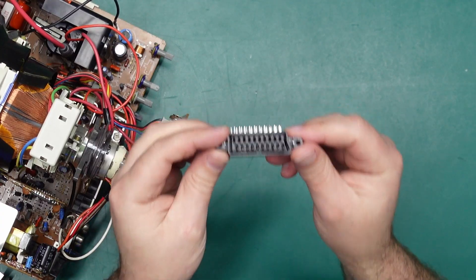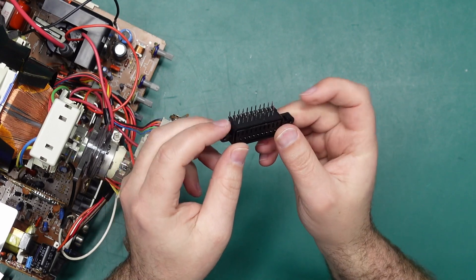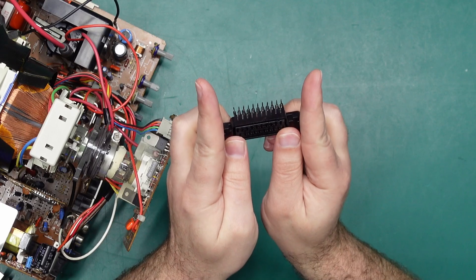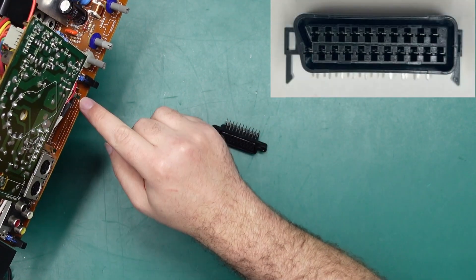All right so for the parts required you'll obviously need a right angle SCART connector. Try and find one that has the little tabs that stick downwards alongside the pins because there are holes in the rear of the board for those tabs.